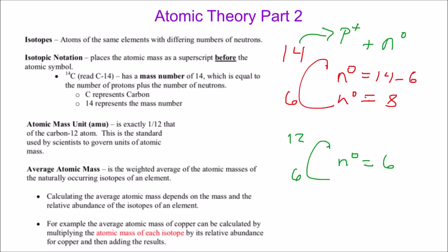How do they calculate the average atomic mass? It depends on the relative abundance of each isotope — meaning how often that isotope shows up in the universe. For example, is almost everything carbon-12 with just a tiny bit of carbon-14, or are they fifty-fifty? That's what relative abundance tells us.